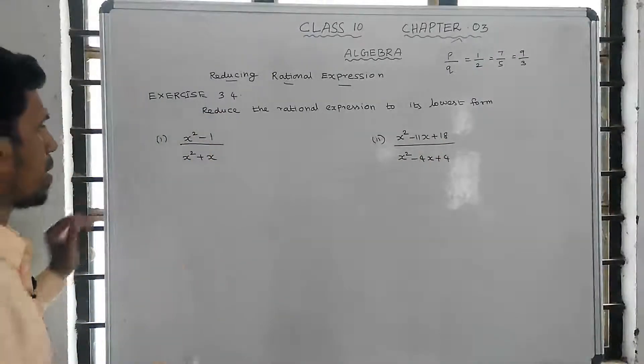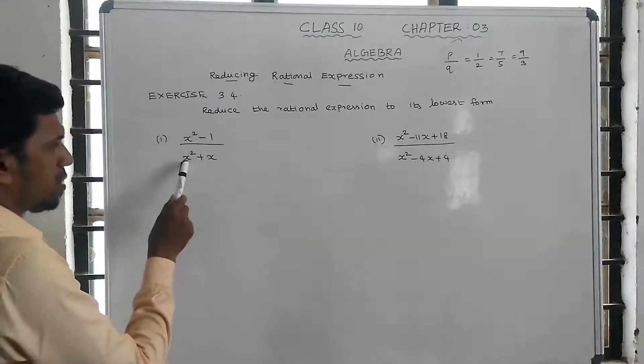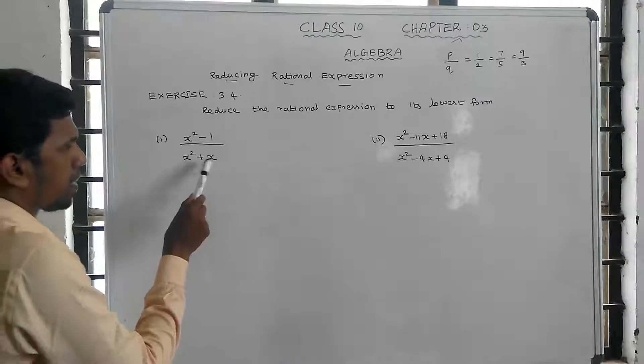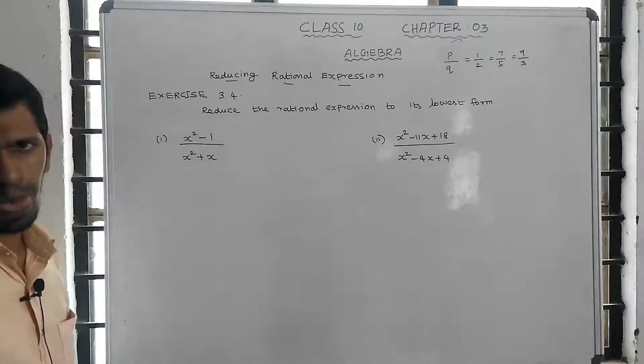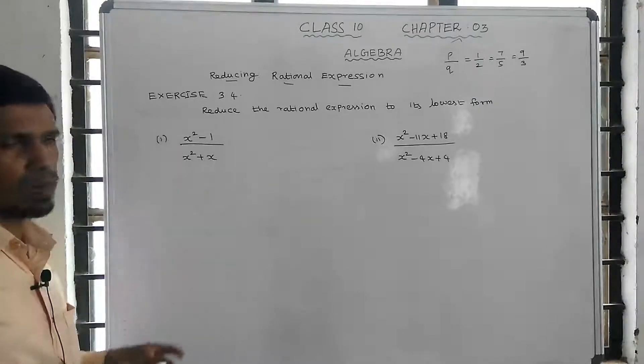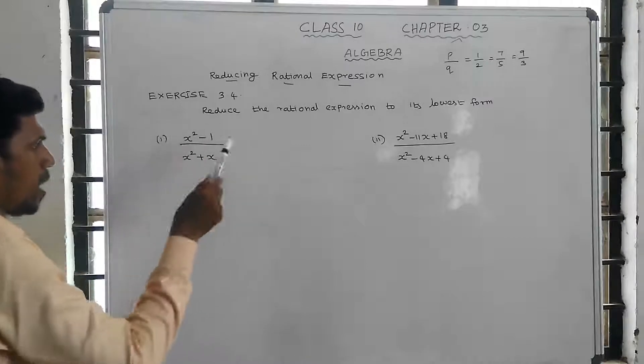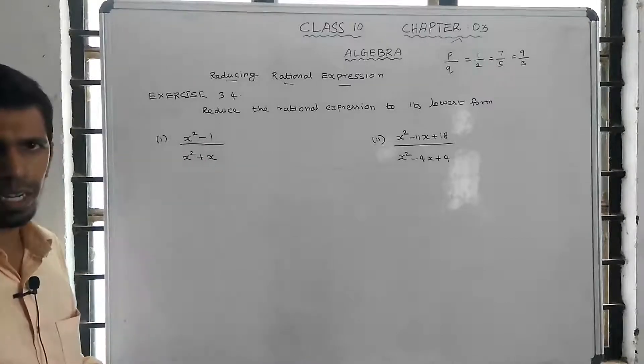So, let's say x squared minus 1 divided by x squared plus x. If you want to factor, first identify the common term in the numerator.